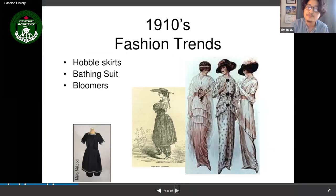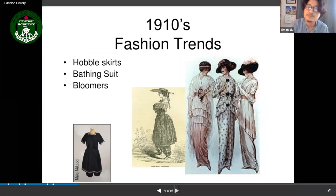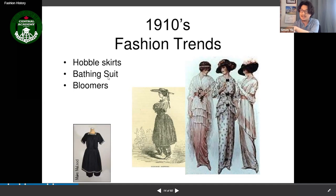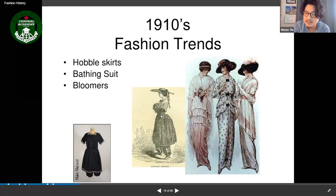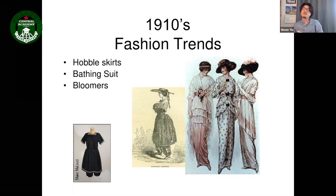World War One was the main influence on fashion. The fashion trends included the hobble skirt — a skirt with a very narrow hem that made you walk like a hobble. The first bathing suits also appeared in the 1910s, along with bloomers — a garment that flared out slightly, smaller than the S-shaped Edwardian style.